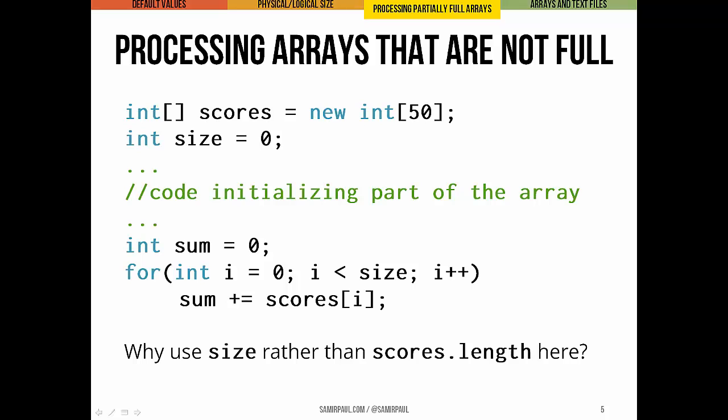So we can see here an example of a chunk of code that's taking some array scores, which is of length 50. Instead of just blindly summing all 50 elements of the array, we would go ahead and only sum the elements up to whatever our logical size was, however many real values were stored in our array.